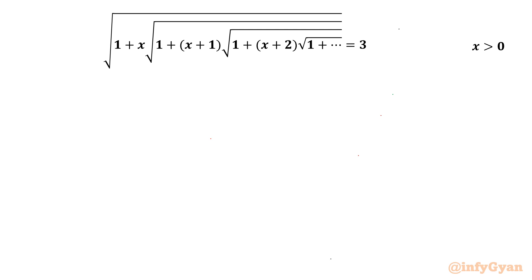It is square root of 1 plus x times square root of 1 plus x plus 1 times square root of 1 plus x plus 2 and so on equal to 3. x is given to us non-negative, positive exactly.